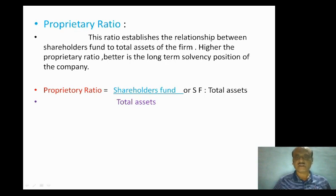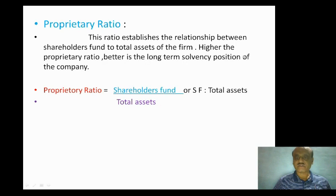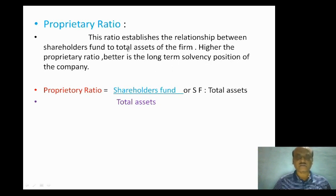The proprietary ratio shows the relationship between shareholders fund and total assets of the firm. Higher the proprietary ratio, better is the long-term solvency position of the company. The proprietary ratio is called the shareholders fund to total assets relationship.